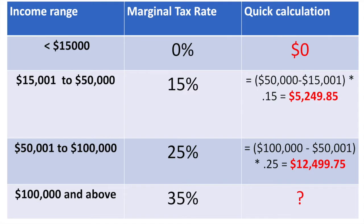I'll explain this through the table. For someone earning less than $15,000, there is no tax owed. But if you earn over $15,000, then anything up to that point will not be taxed, so the tax owed on this bracket is $0.